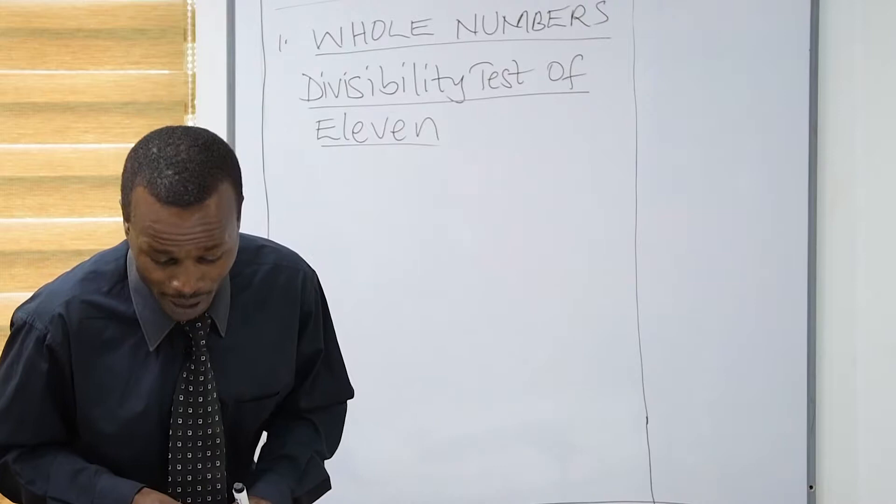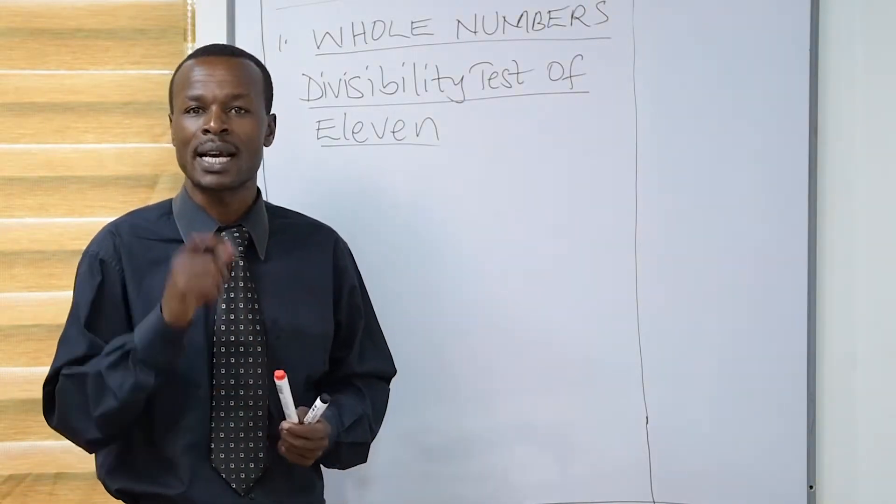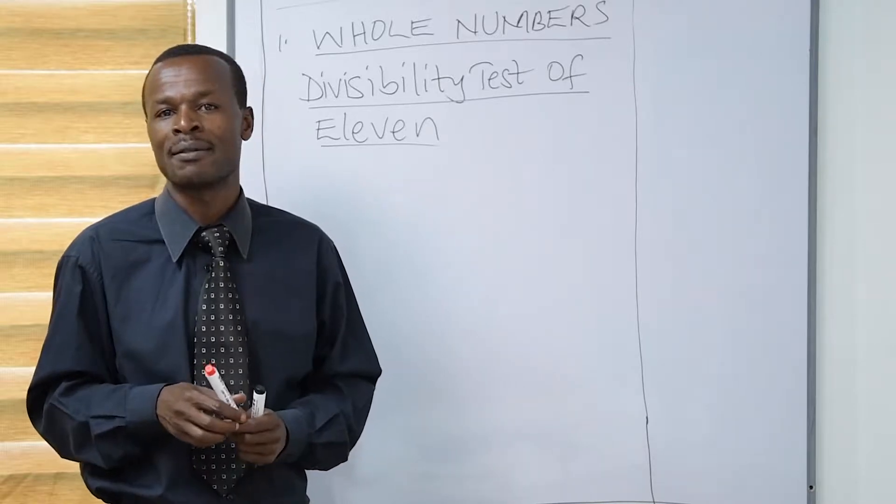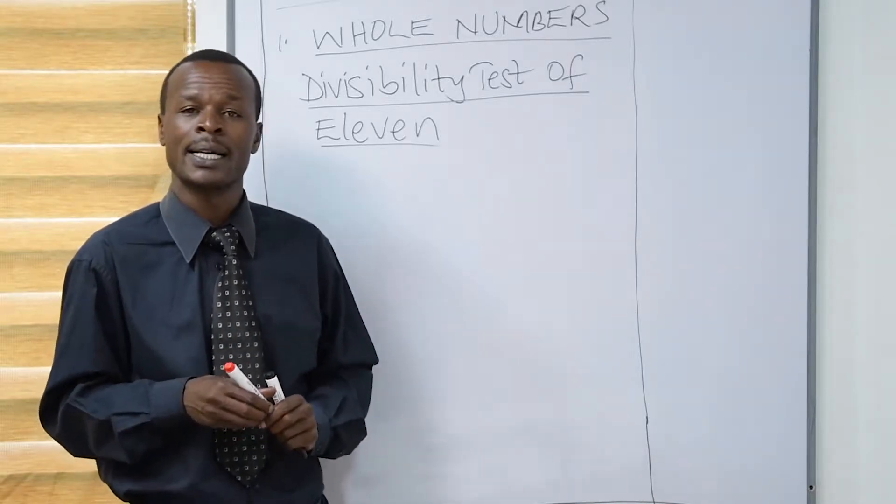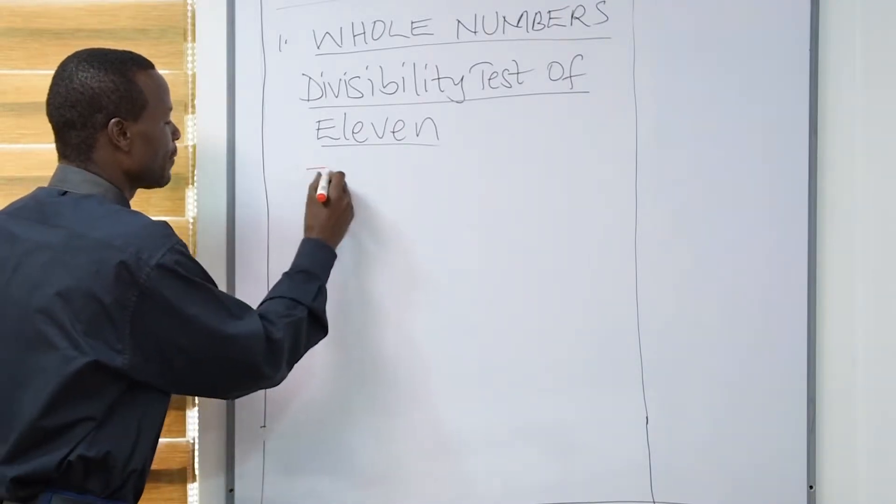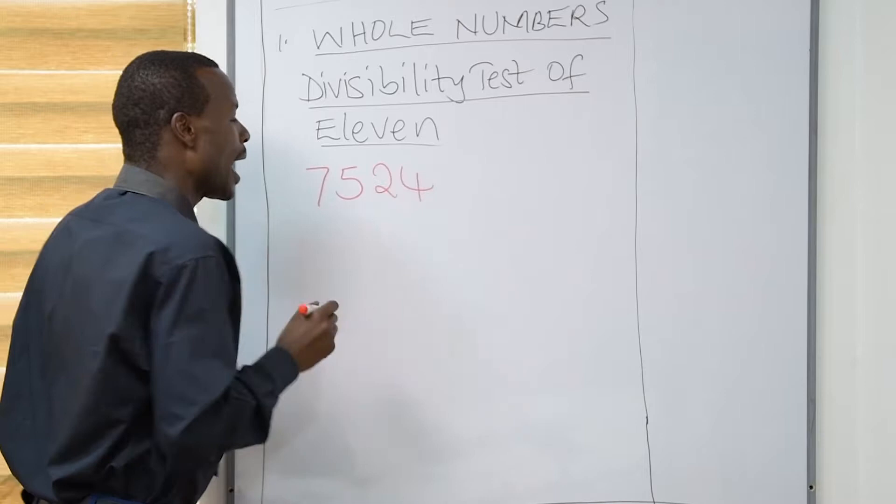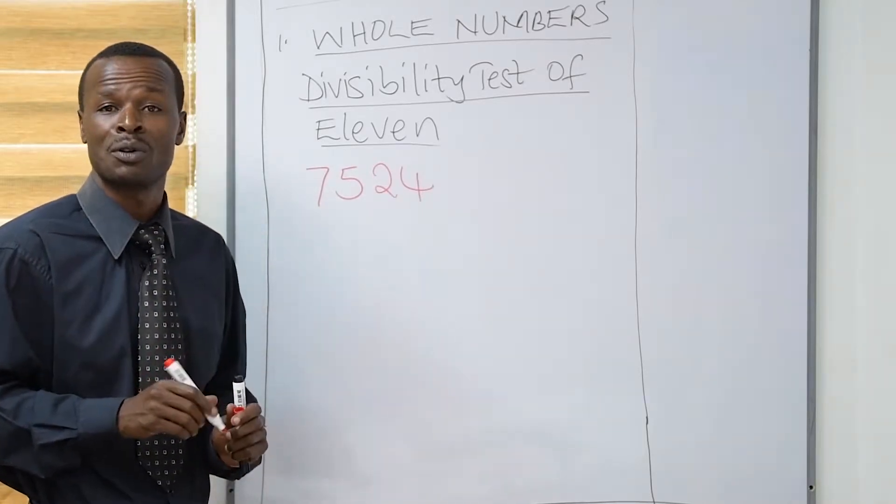Now, let's look at an illustration where we are going to prove that a number is divisible by 11. I take a number like 7,524. How is this number divisible by 11?